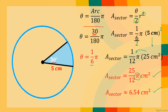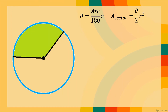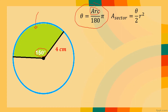Let's have another example. We need to determine the area of this next sector. First, we convert the degree measure of the angle — 150 degrees — to radian measure. So θ = (150/180) × π. Simplifying 150 over 180 gives us θ = (5/6)π.